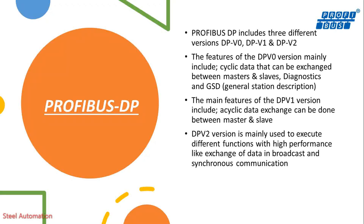The main features of DPV-1 include acyclic data exchange between master and slave. DPV-2 is mainly used to execute different functions with high performance, such as exchange of data in broadcast and synchronous communication.